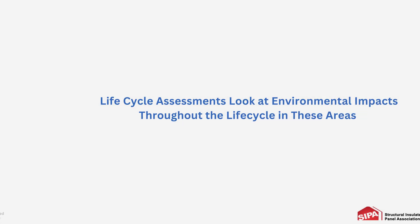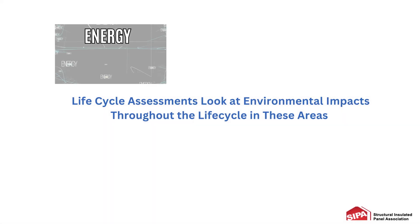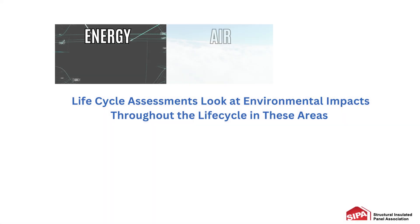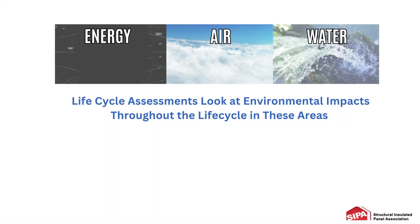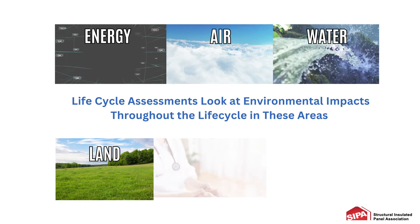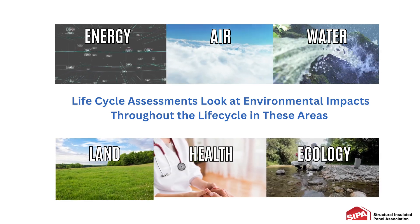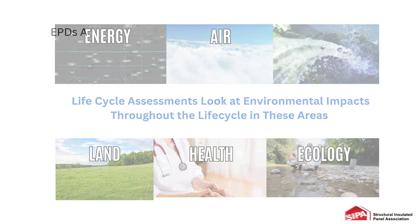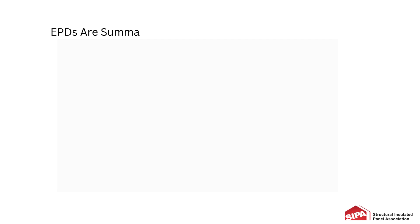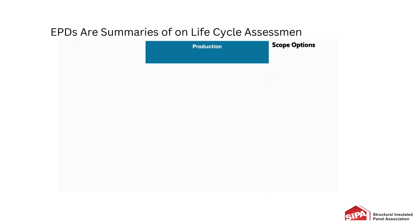A life cycle assessment looks at these impact areas: energy, air, water, land, health, and ecology. A life cycle assessment is a complicated examination of the ecological impacts of a product across its entire lifespan.